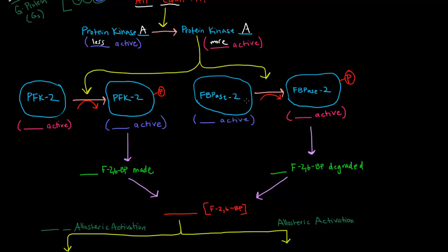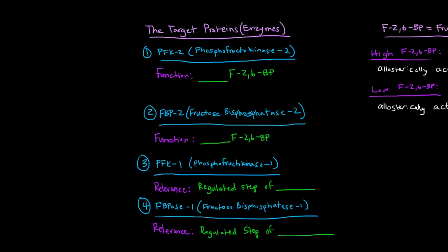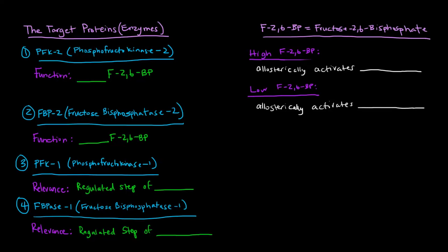Now what do these protein kinase A's do? They're going to act on target proteins to add phosphates to them. Now before we start talking about these target proteins, these enzymes, let's review them really quickly. So the target proteins - there are PFK-2 and FBPase-2.